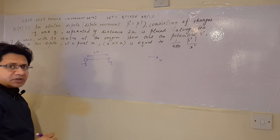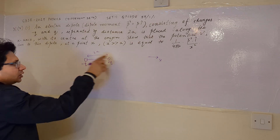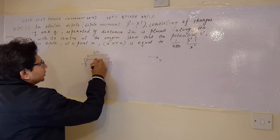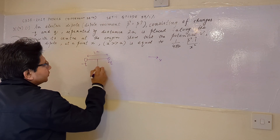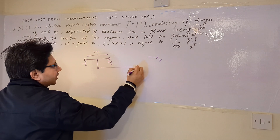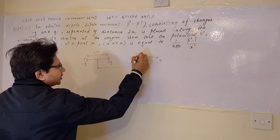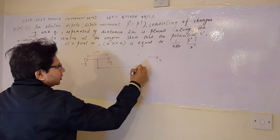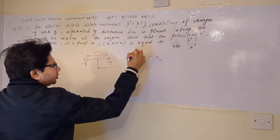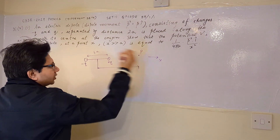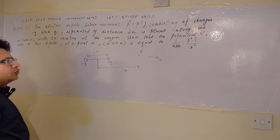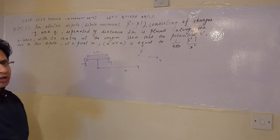The separation between the charges is 2a. From the center of the dipole, at a distance of x, there is a point P, and at this particular point we have to calculate the potential.